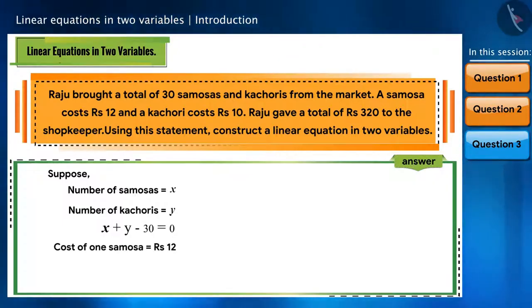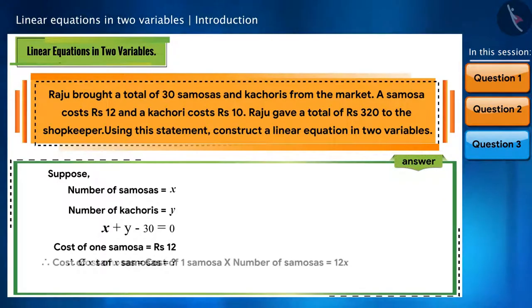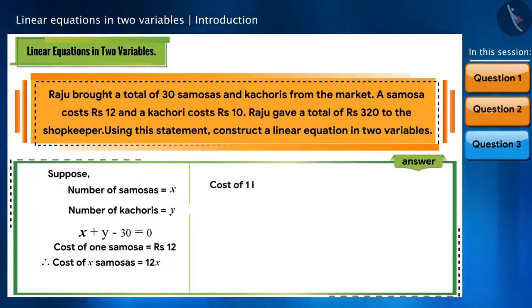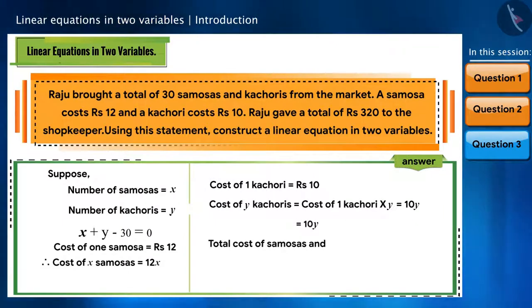We already assumed the number of samosas as x and the number of kachoris as y. So according to the question, the cost of a samosa is rupees 12. What do we do if we want to find the cost of x samosas? We will multiply the cost of one samosa by the number of samosas, so this will become 12x. Similarly, the cost of y kachoris will be 10y. Total cost of samosas and kachoris is rupees 320, so we will write this as 12x plus 10y is equal to 320, or 12x plus 10y minus 320 is equal to zero.